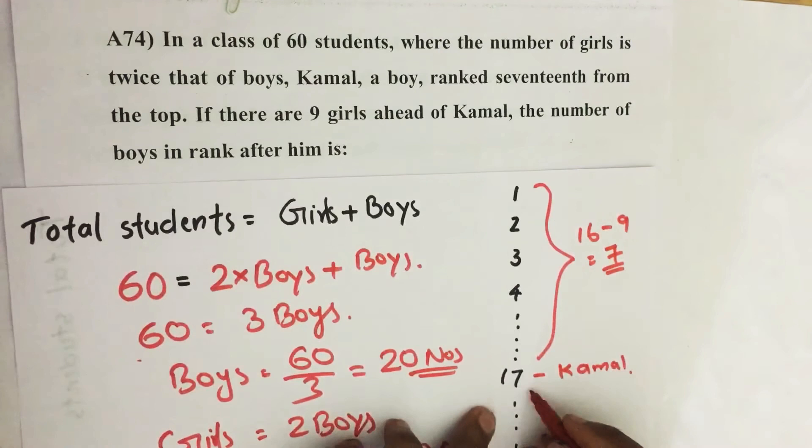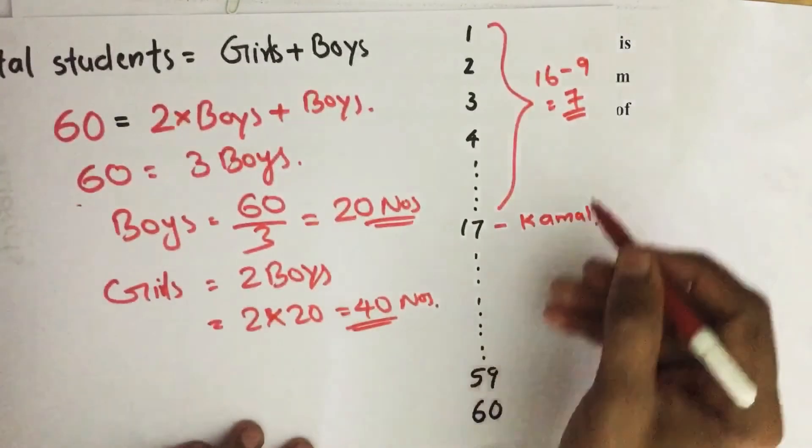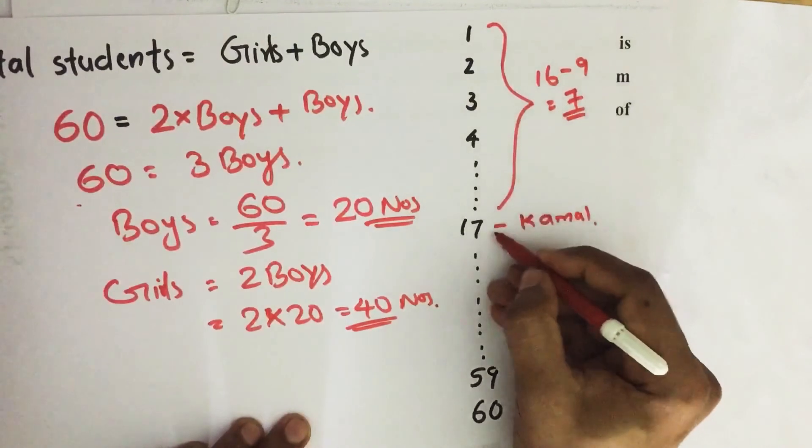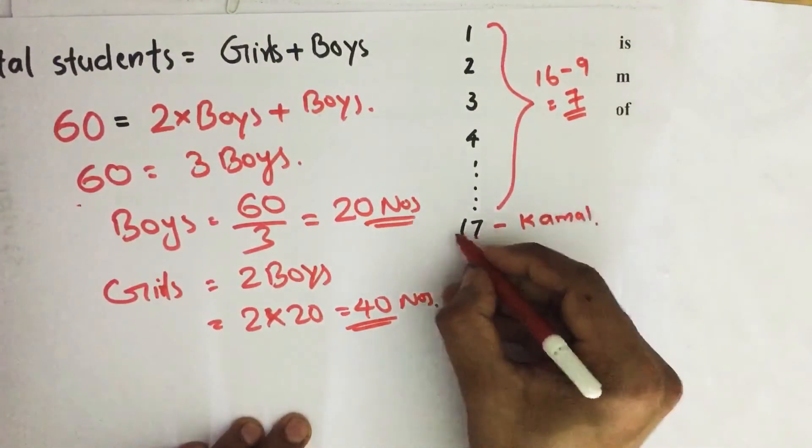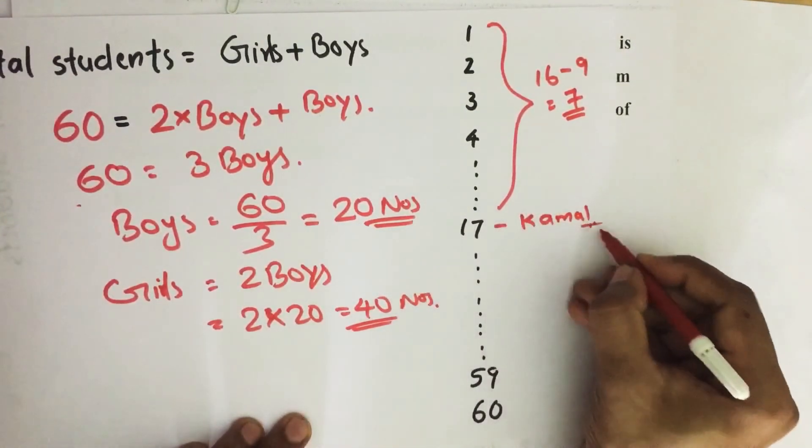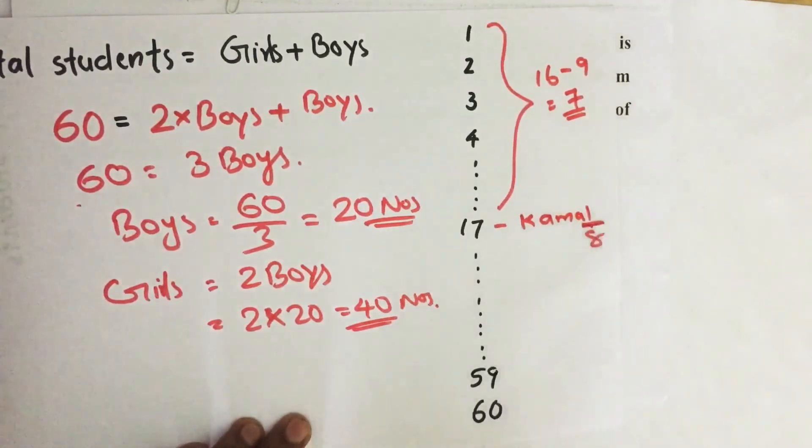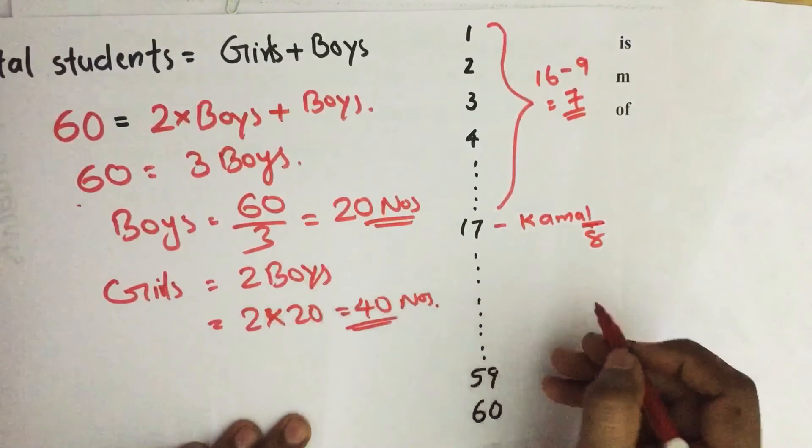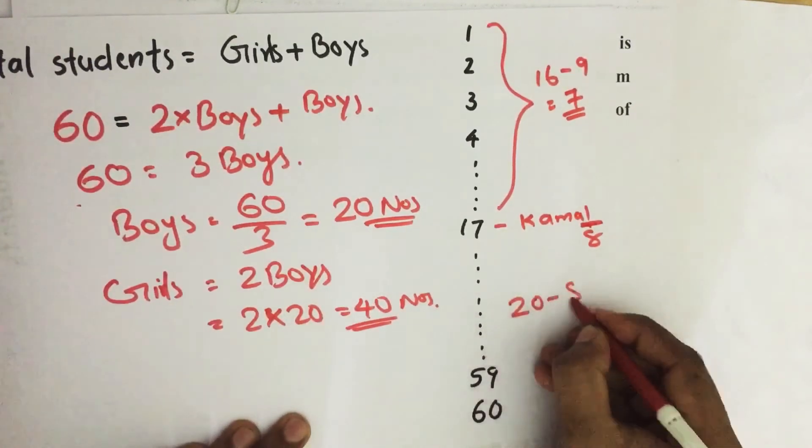Then how many boys are there below Kamal, that is what we have to find. So 7 plus Kamal, we have total 8 till this. Till this we have 8 boys, then remaining number of boys equal to 20 minus 8.